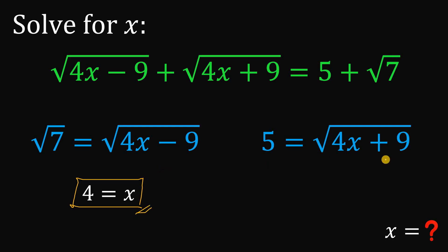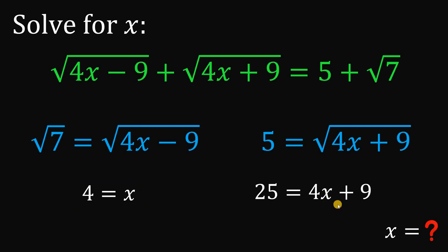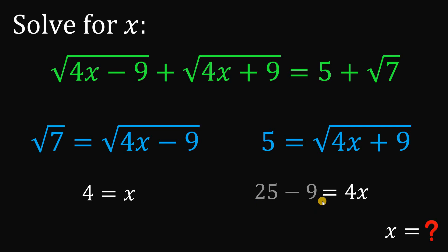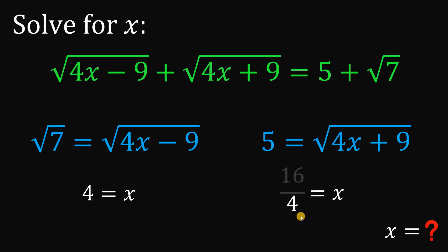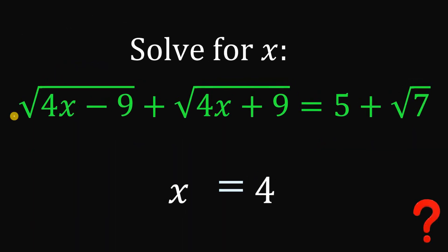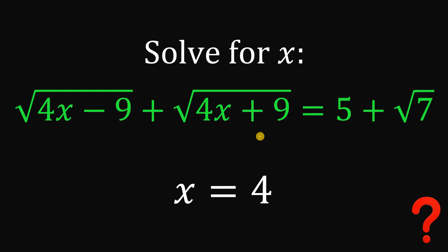On the second equation, we expect to get x equals 4 as well. With s equals 5, squaring both sides gives 25 equals 4x plus 9. Subtracting 9 from both sides gives 16, and dividing by 4 confirms x equals 4. This satisfies the original equation: square root of 4x minus 9 plus square root of 4x plus 9 equals 5 plus square root of 7.